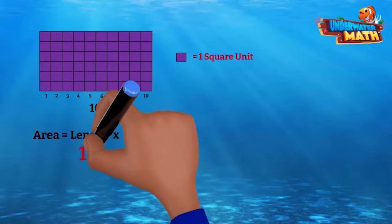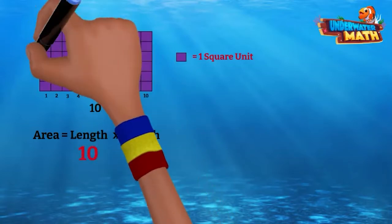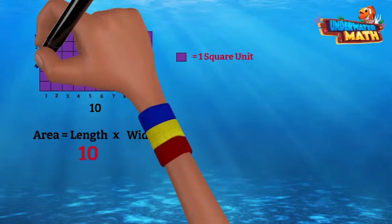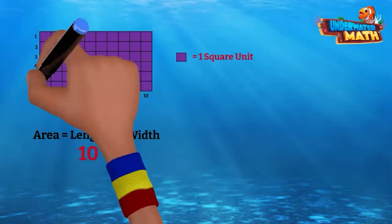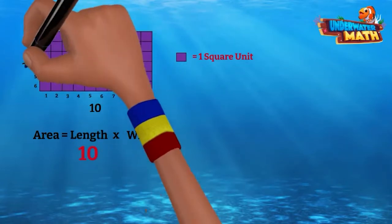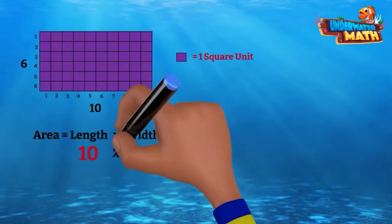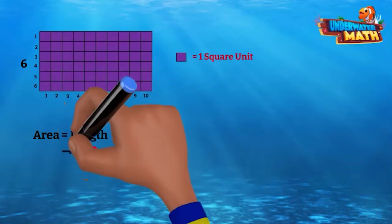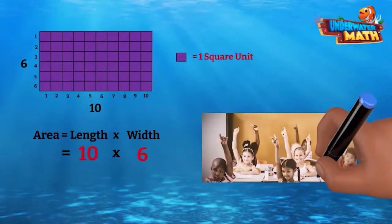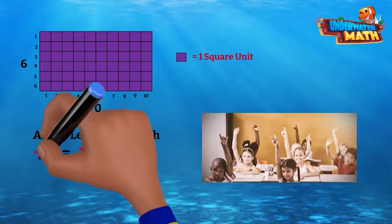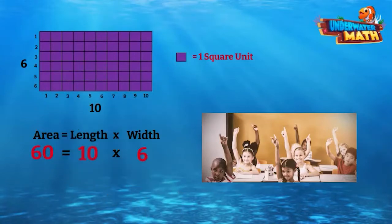Now let's count the width: 1, 2, 3, 4, 5, 6. The width is 6 square units. Now multiply 10 times 6. Raise your hand if you know the answer. The answer is 60. The area of this rectangle is 60 square units.